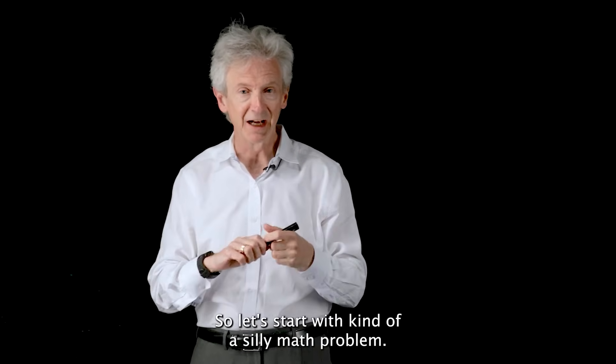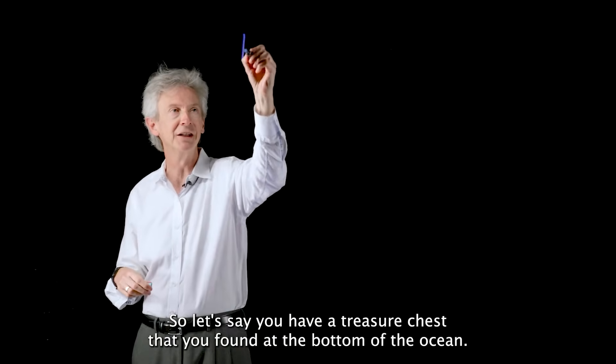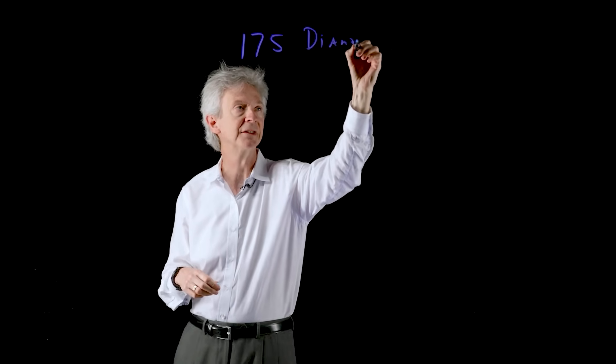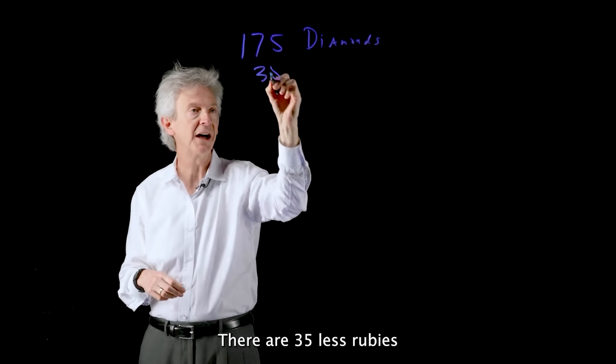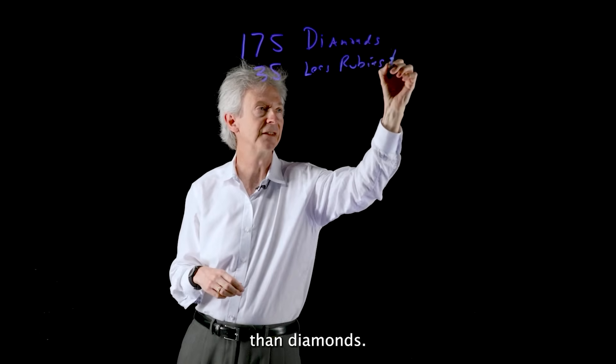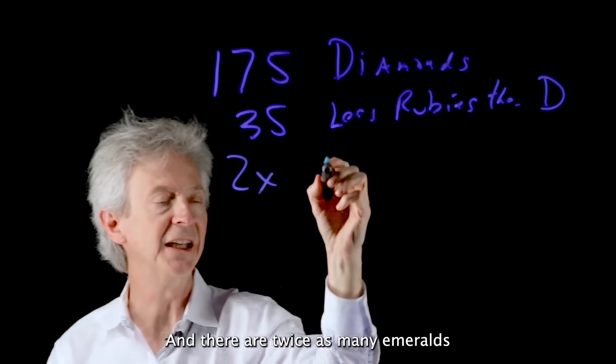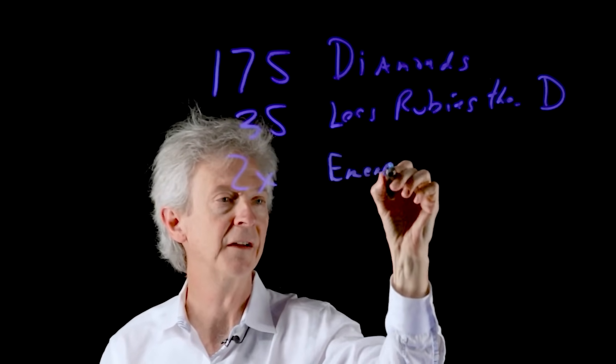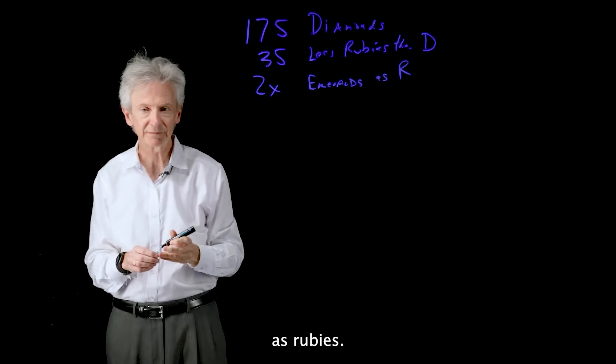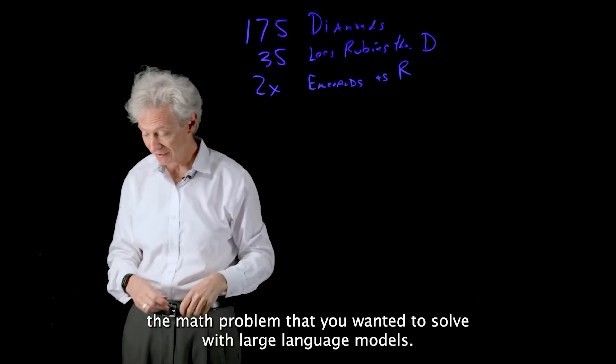So let's start with kind of a silly math problem. So let's say you have a treasure chest that you found at the bottom of the ocean. And in that chest are 175 diamonds. There are 35 less rubies than diamonds. And there are twice as many emeralds as rubies. So let's say that was the math problem that you wanted to solve with large language models.